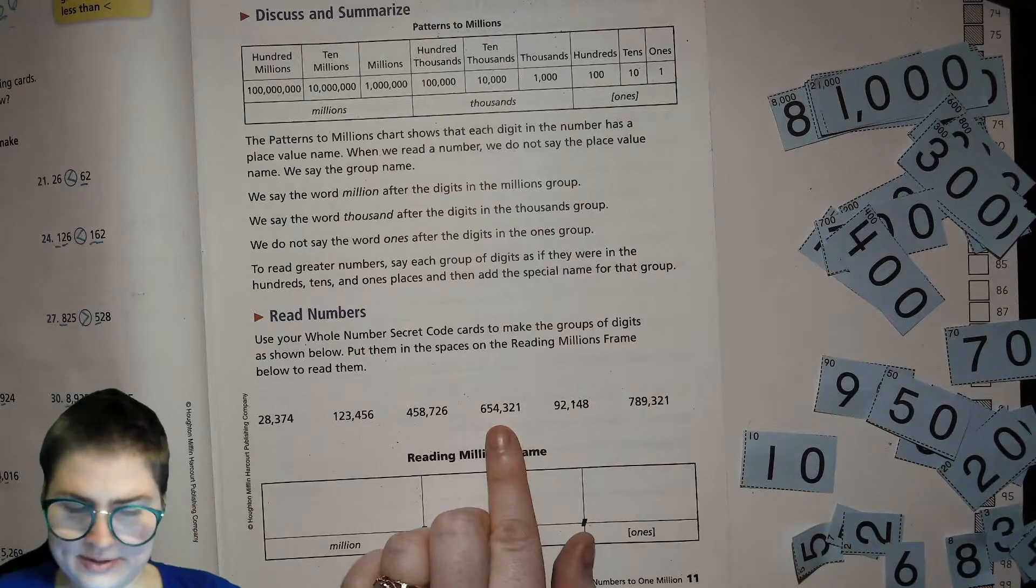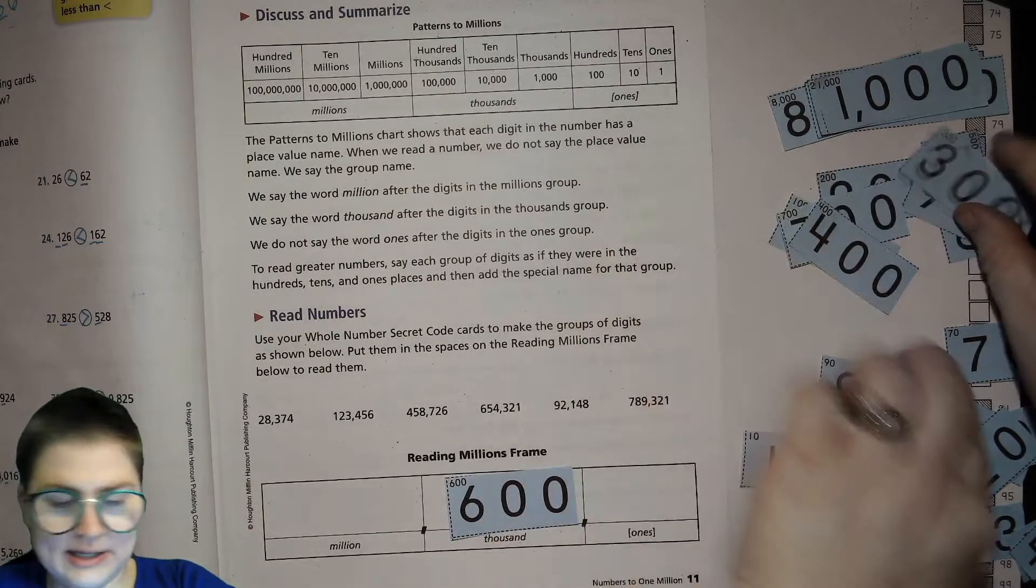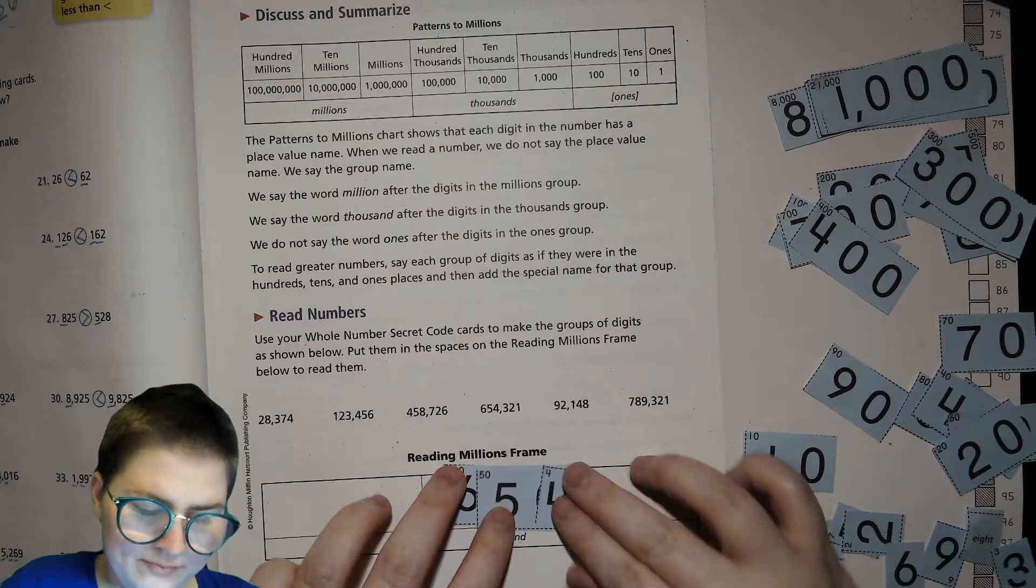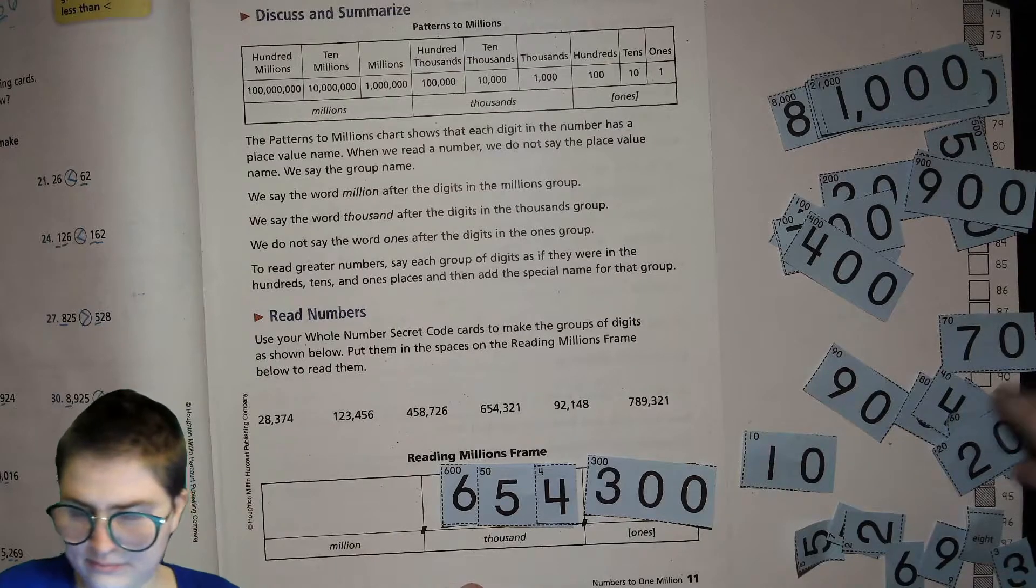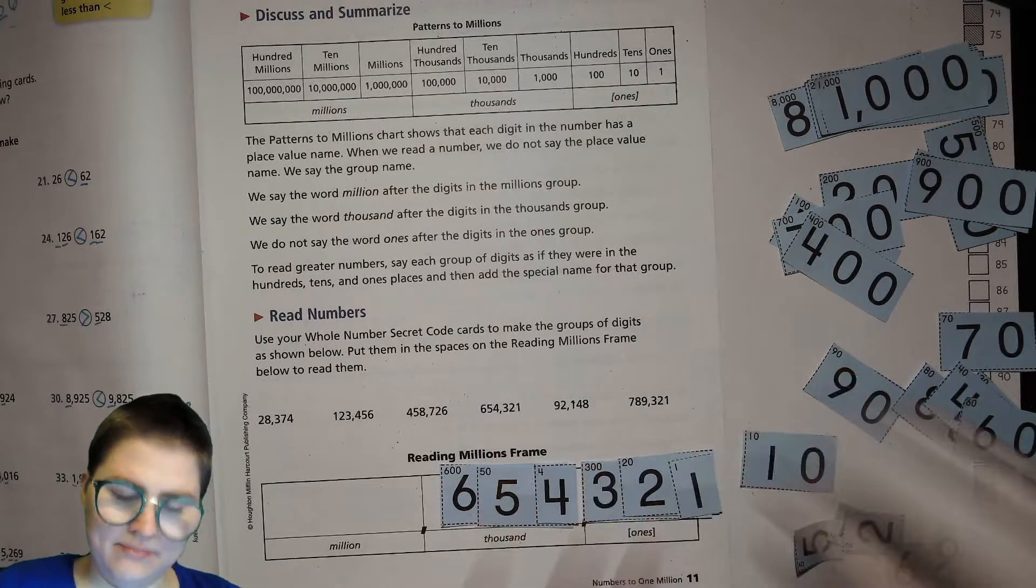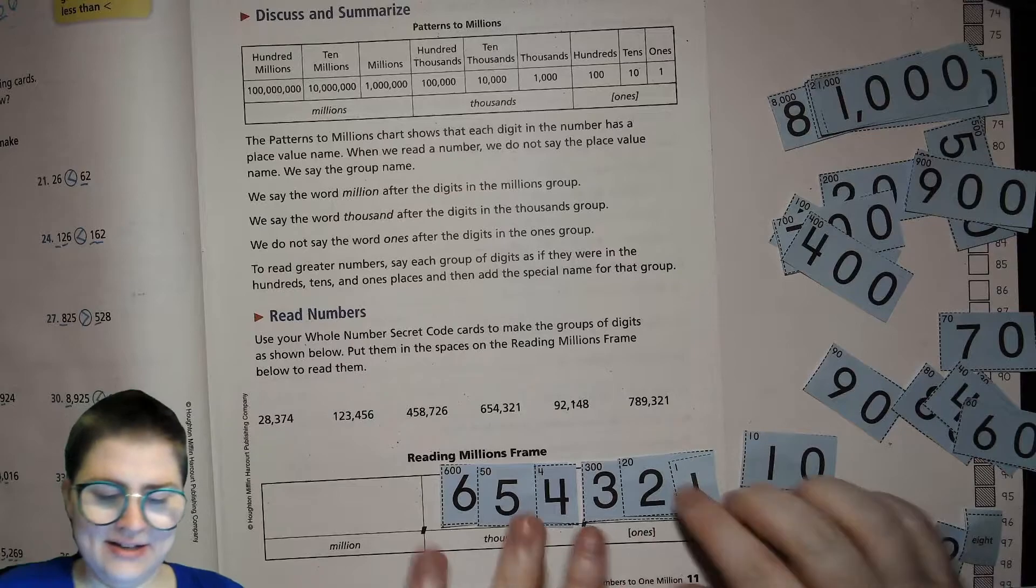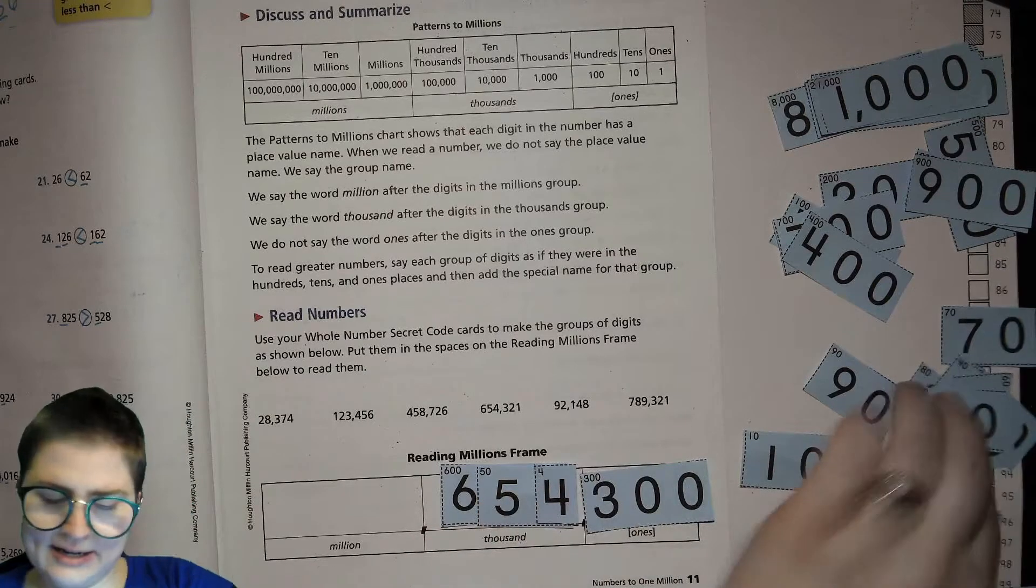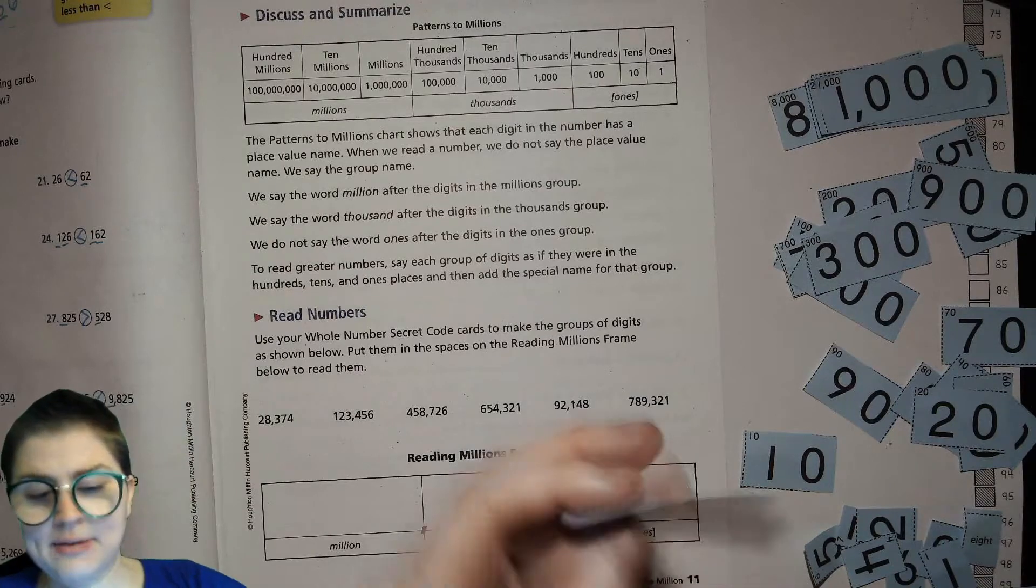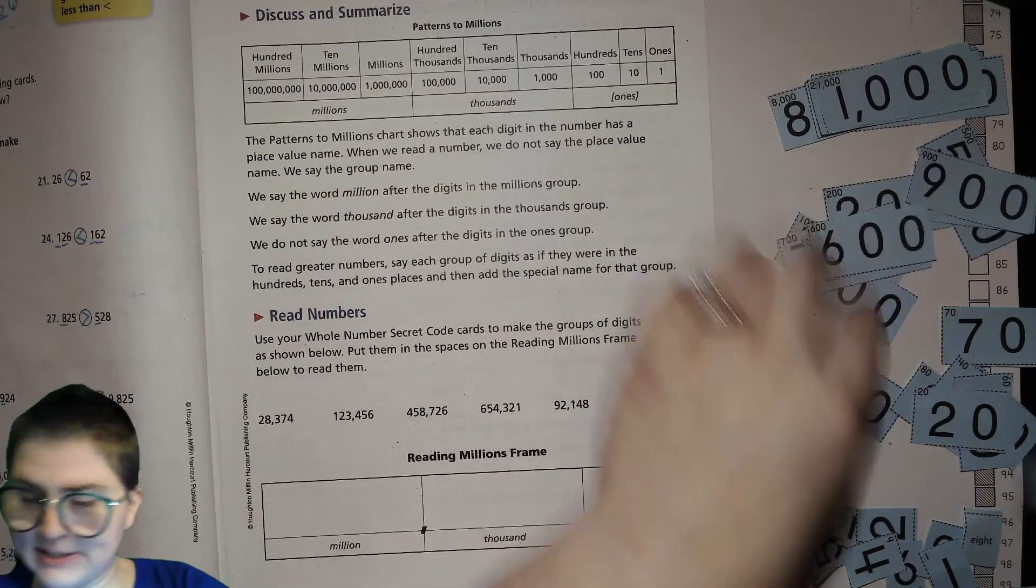This one I'd like you to try to set it up same time I'm setting it up. All right, 654,321. And we are able to build these with our secret code cards even though we only have like one set of each 1, 10, and 100, because they're not repeating digits in the hundreds place and hundreds thousands place. I think they're doing that on purpose to help us out.